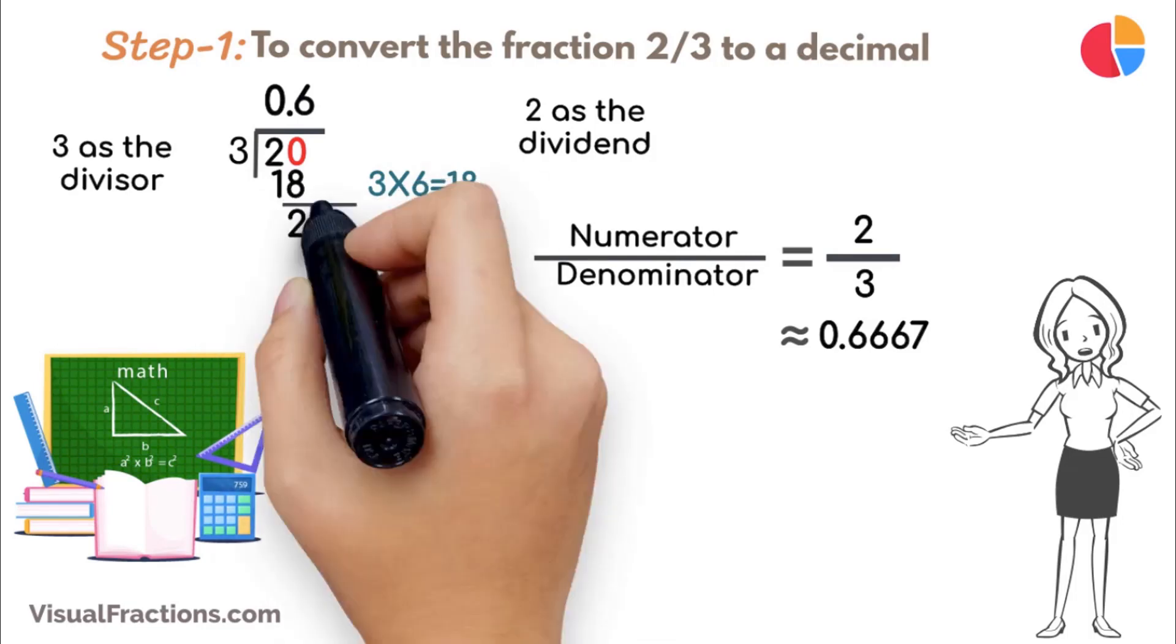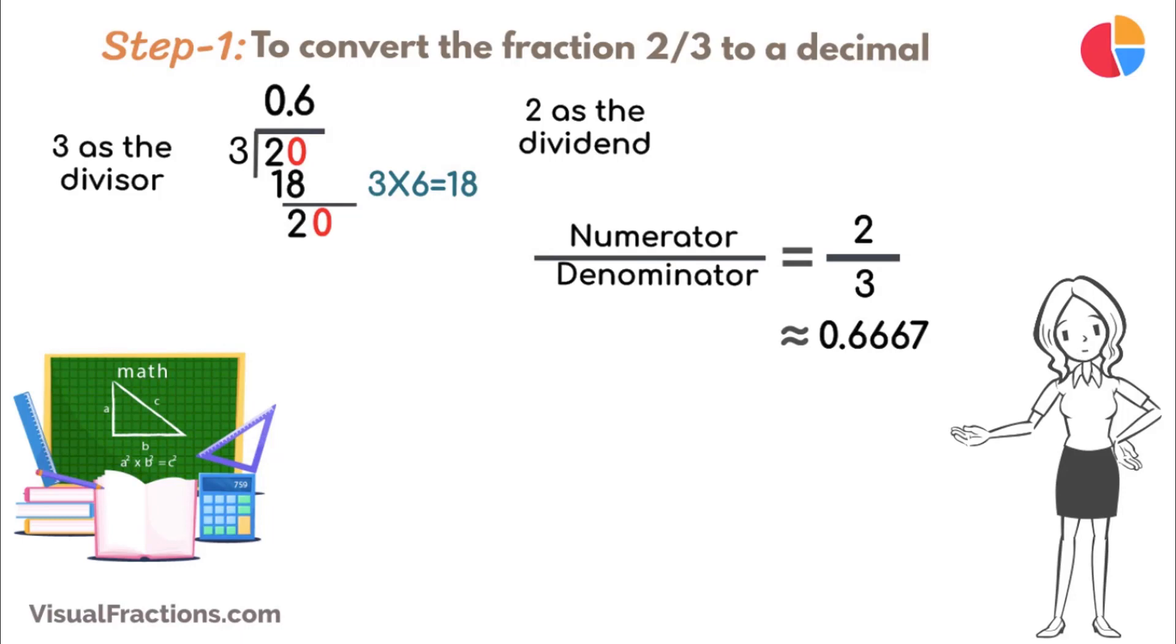Next, bring down another 0 to make it 20 again. 3 goes into 20 six times, updating the quotient to 0.66. Multiply 3 by 6 to get 18, and subtract this from 20, leaving a remainder of 2.